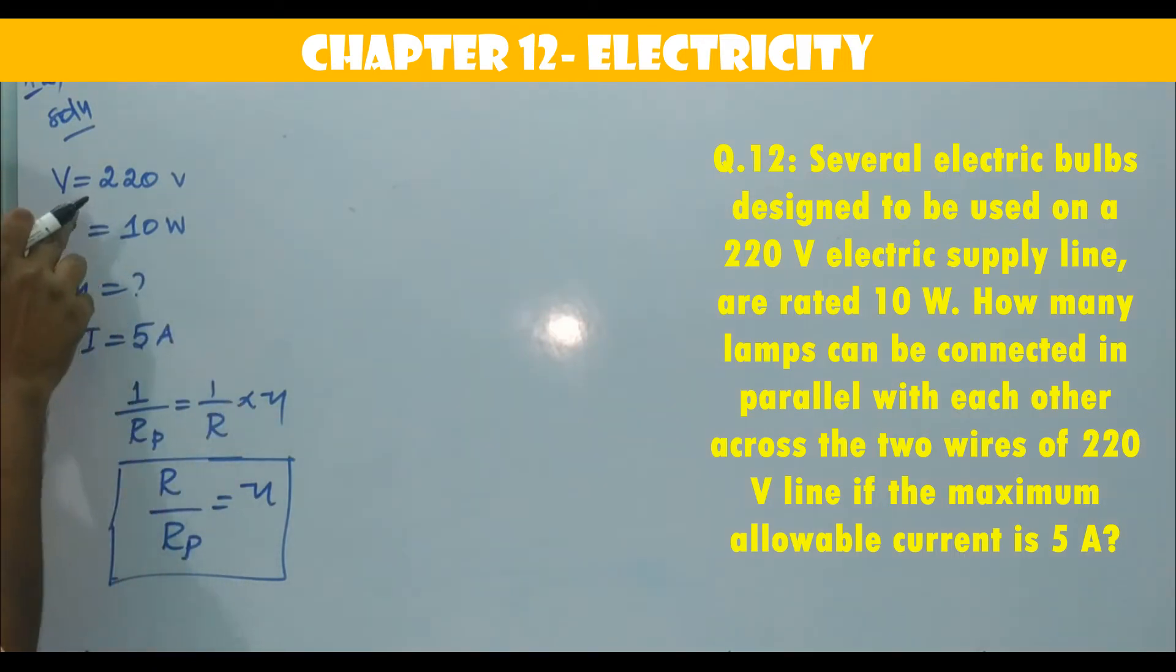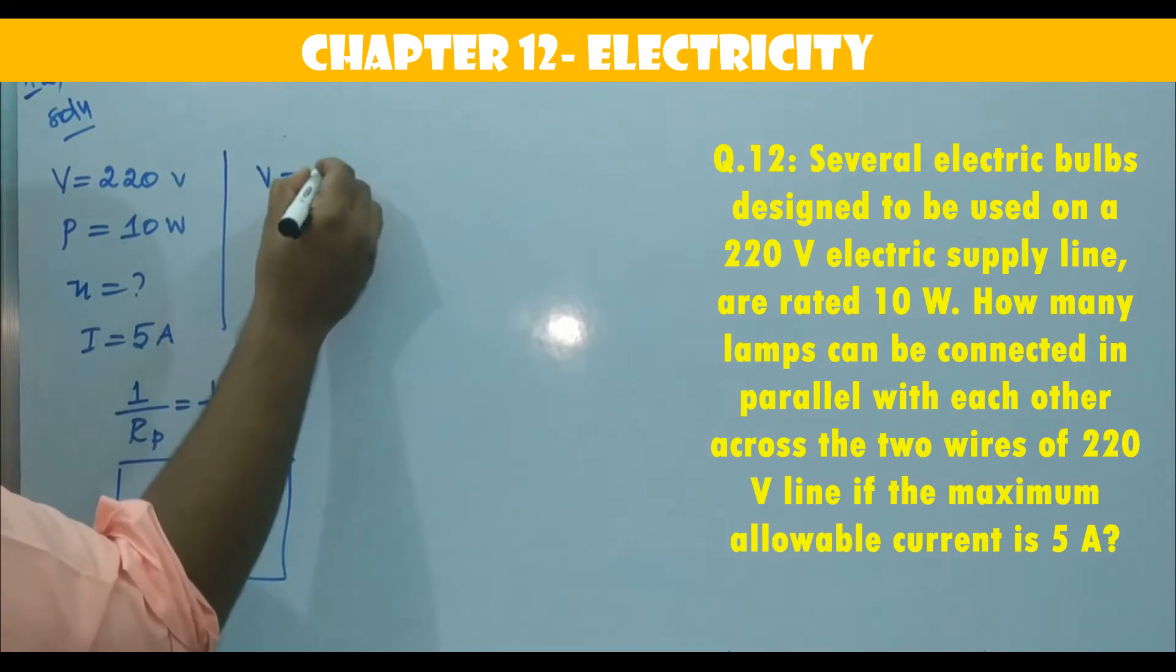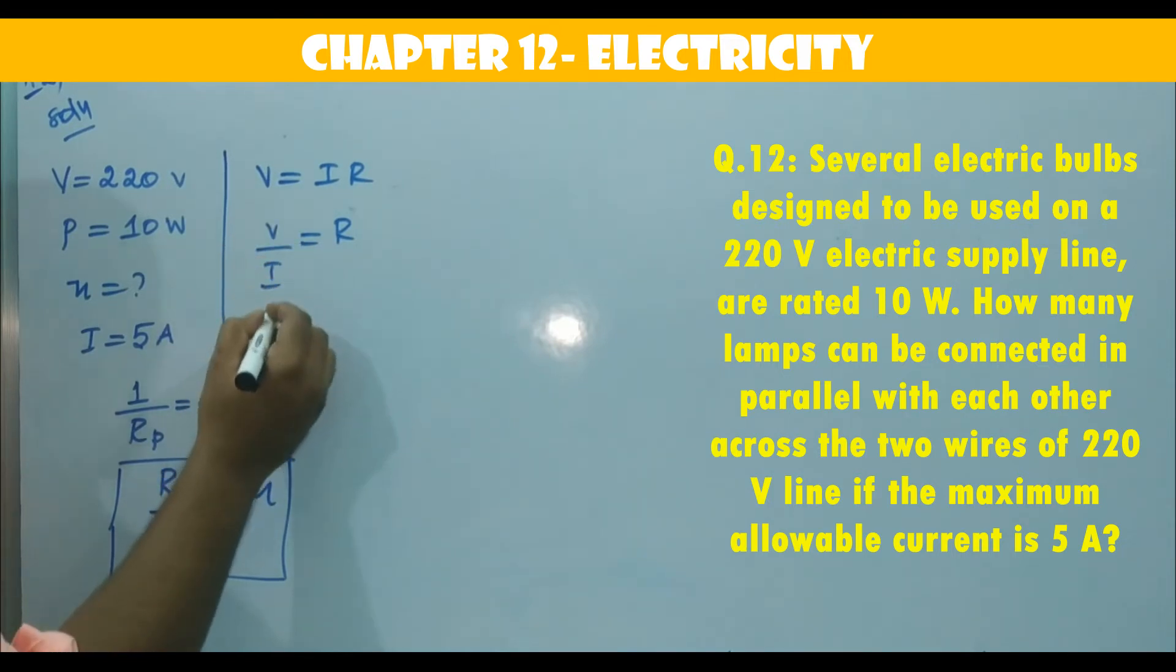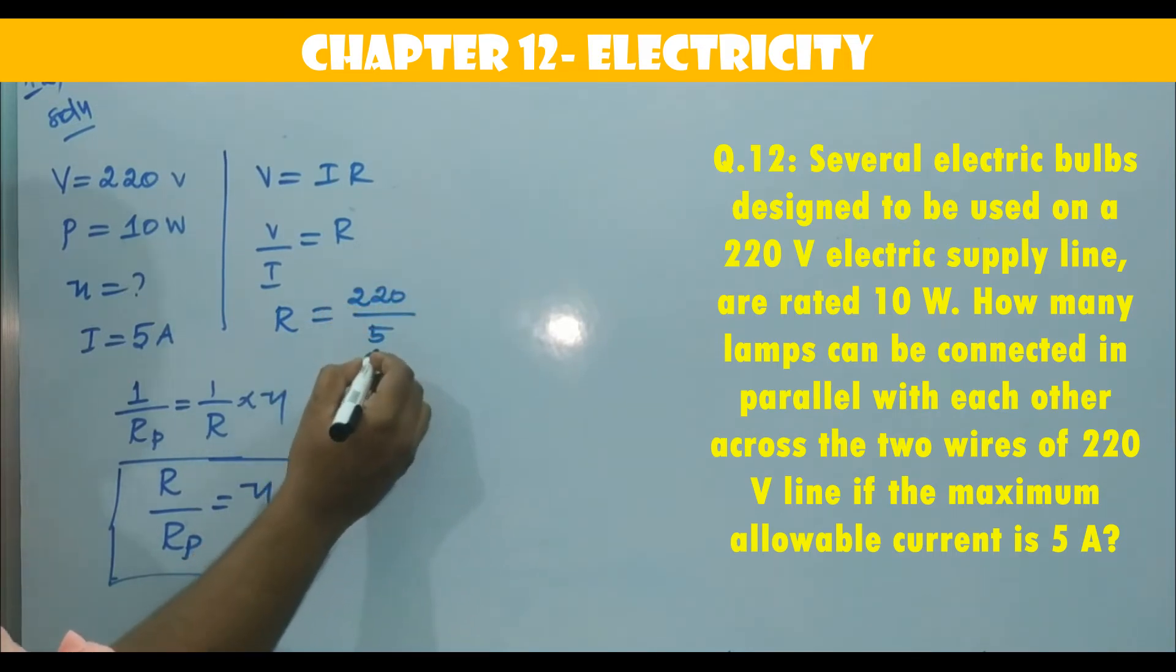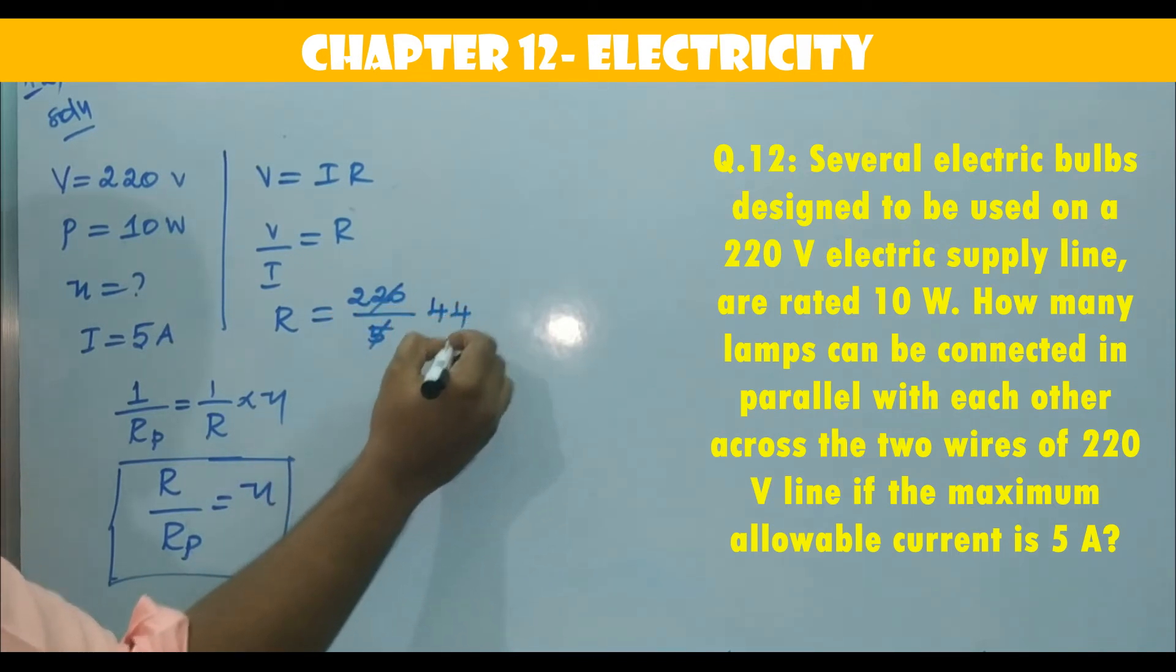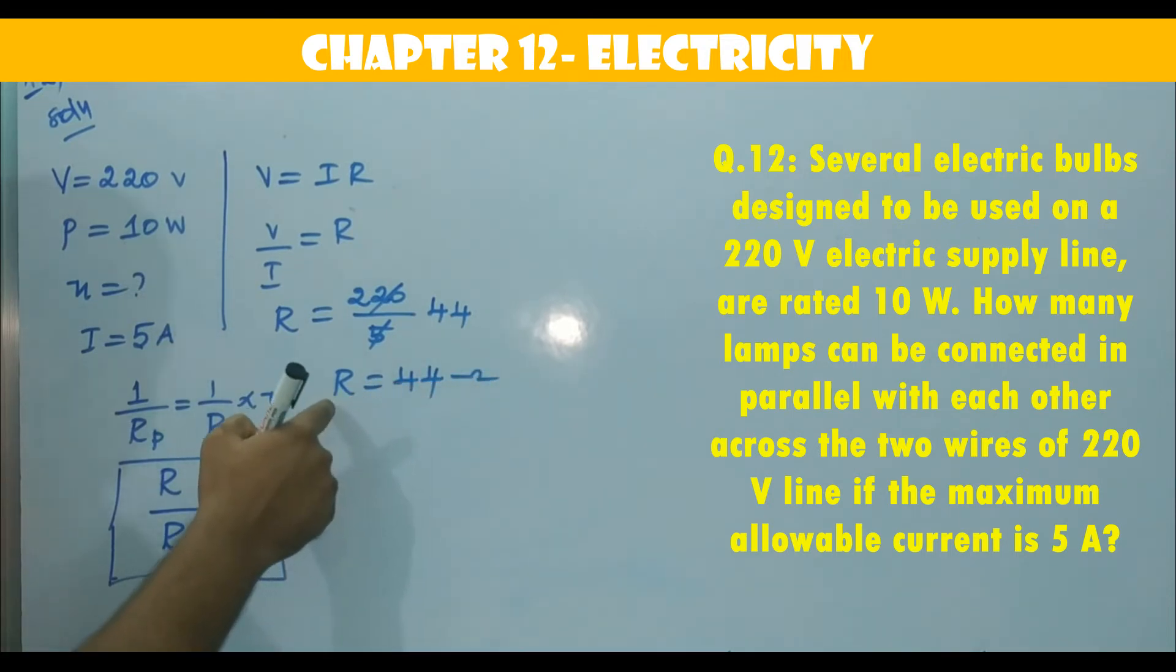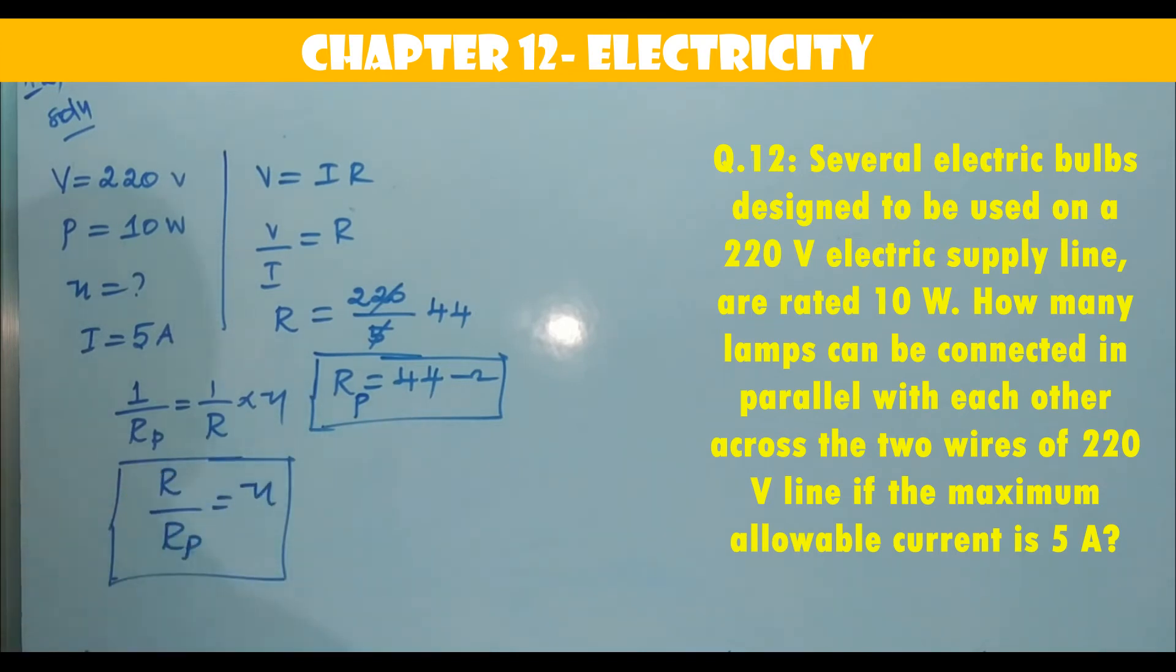First, we will find out that equivalent resistance. They are given V value and I value. So, according to Ohm's law, V is equal to IR. Then R is equal to V by I. Then R is equal to 220 by 5. That means 44. So, now we got R value. That is 44 Ohm. That is resistance of a circuit. That means Rp, equivalent resistance. Resistance of a circuit is 44 Ohm.